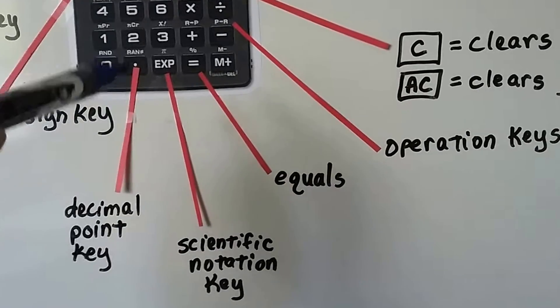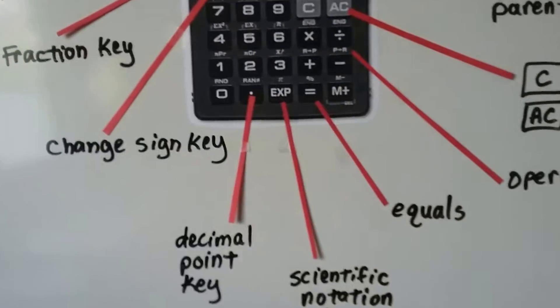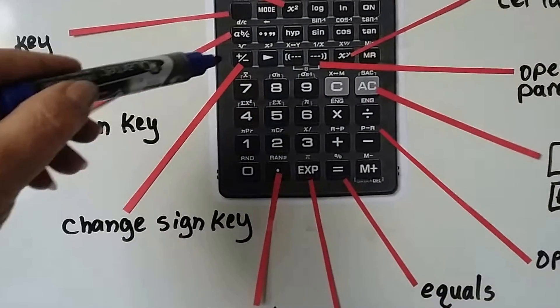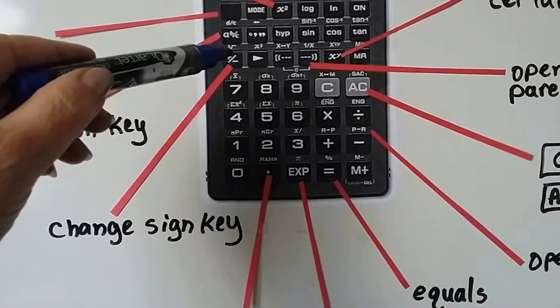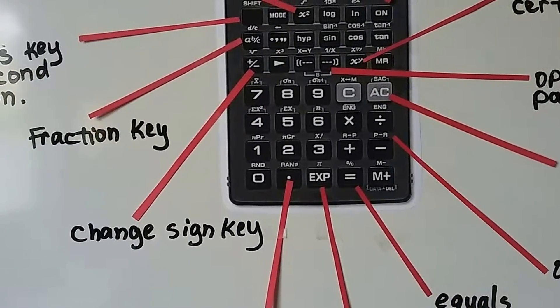Here's the decimal point key. That's if you're doing anything with money or decimals. And this key right here, it's got a plus and a slash and a minus. That's the change sign key, so you can actually change a sign.